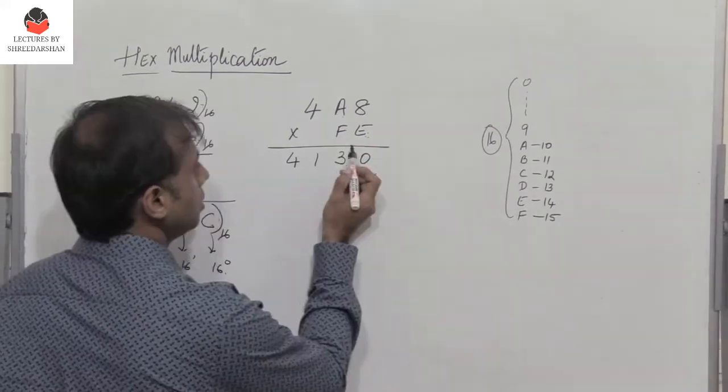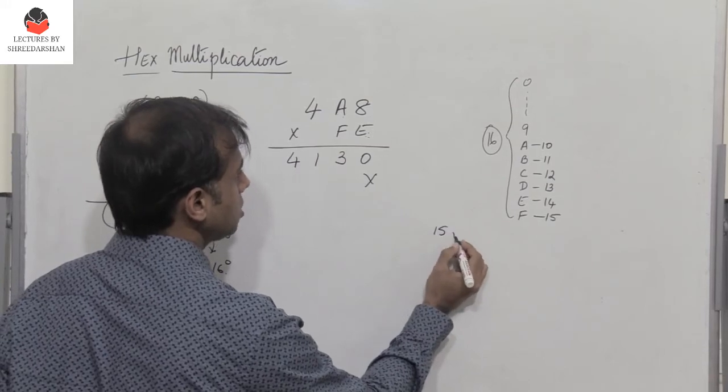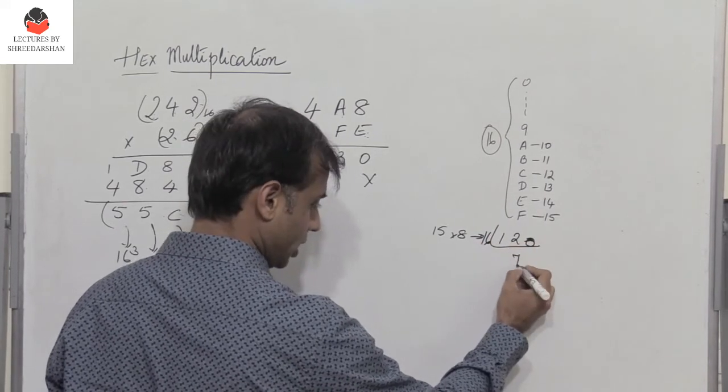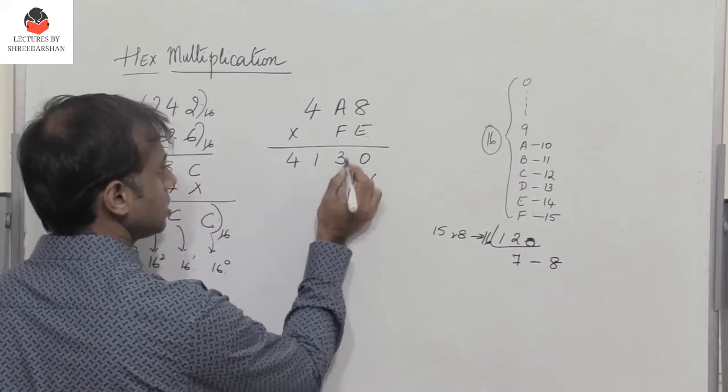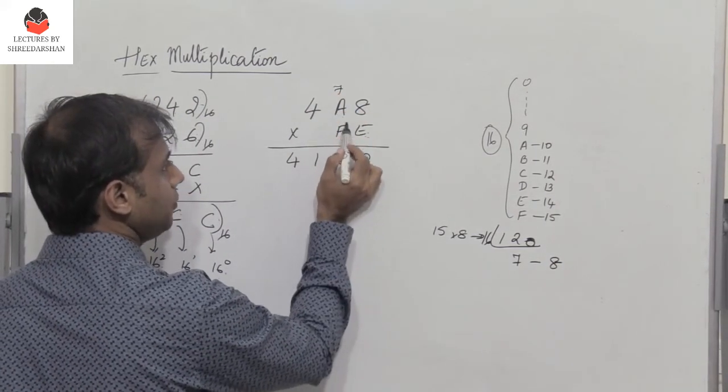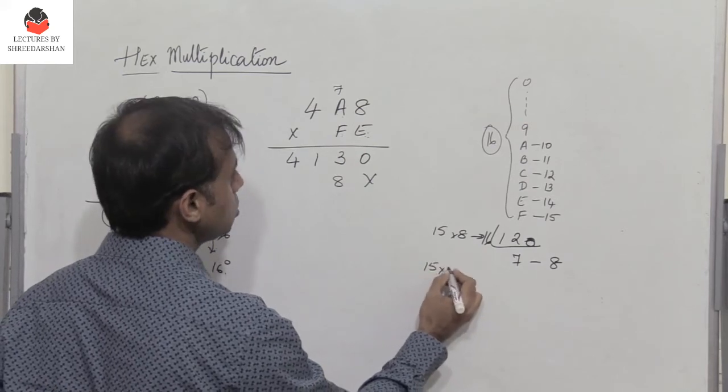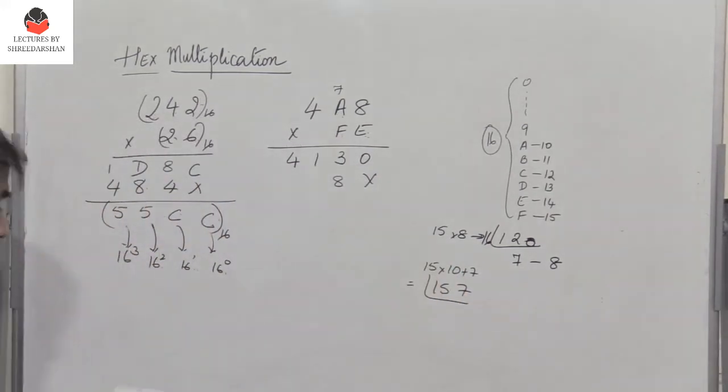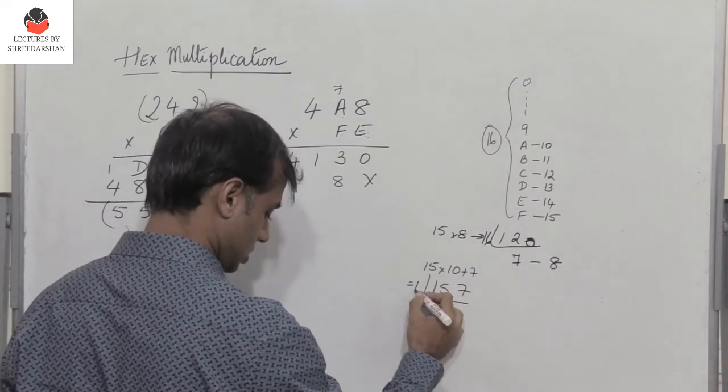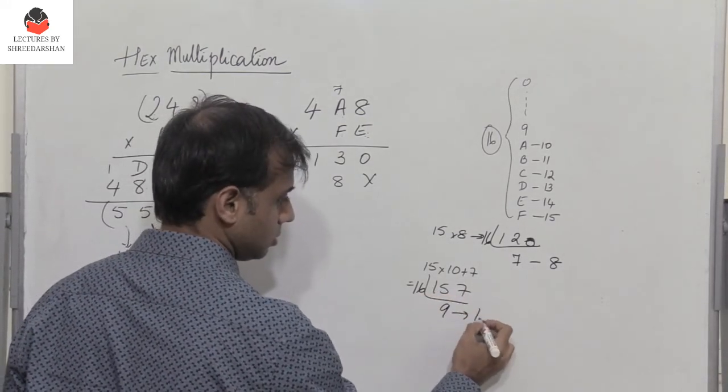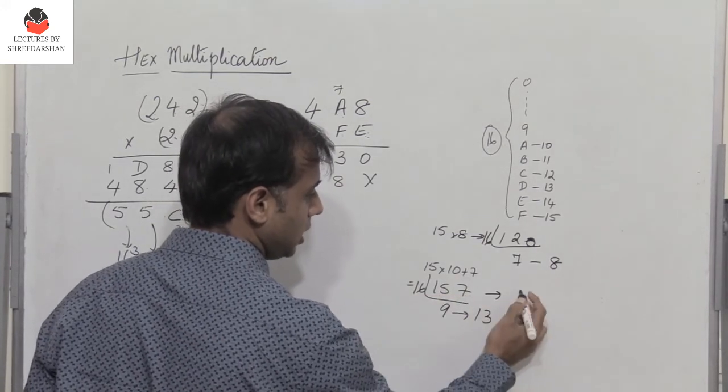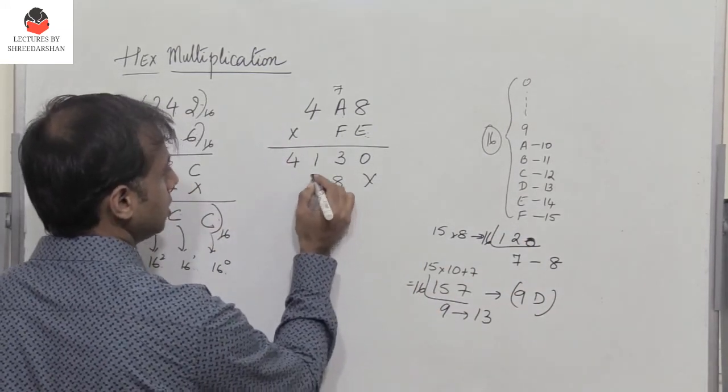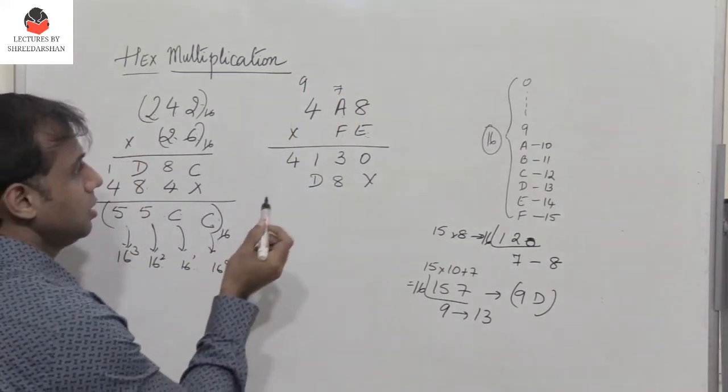So now what happens? Now F is 15. So 15 into 8 will give me a number 120. So divide 120 by 16, you get 7, 8. So you write 8 with a carry of 7. Now F into A. F is 15 into A is 10 plus 7. So this is 157. So I have to convert this to hex. I divide by 16, I get 9 and 13. So the representation of 157 in hex is 9, 13 is D. So I write D here with a 9 carry.